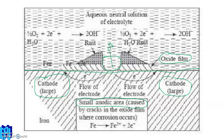The reactions are the same in every case. The oxidation reactions are the same, which is the metal converted to metal ion. If the metal is iron — taking the example as iron — Fe gives Fe2+ plus two electrons. It is clear that the small anode area is caused by cracks in the oxide film where corrosion occurs. Whenever oxidation occurs, that is the place at which corrosion occurs, because corrosion is oxidation taking place at the anode.